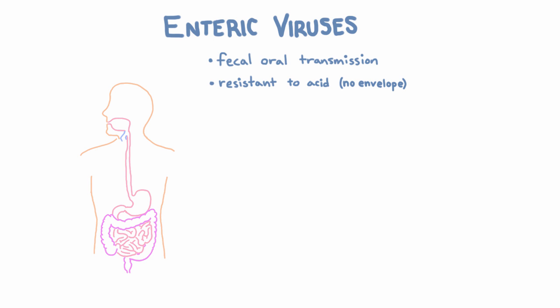So if enteric viruses infect the GI tract, what kinds of symptoms do they cause? Nausea, vomiting, diarrhea — always? No. Just because they replicate there does not necessarily mean they cause those symptoms. Sometimes they can replicate quietly and cause no GI symptoms. You might think, who cares? Well, some viruses can replicate quietly in the GI tract but then spread to infect a different kind of cell in the body where they do cause symptoms. We'll see some very important examples of that.